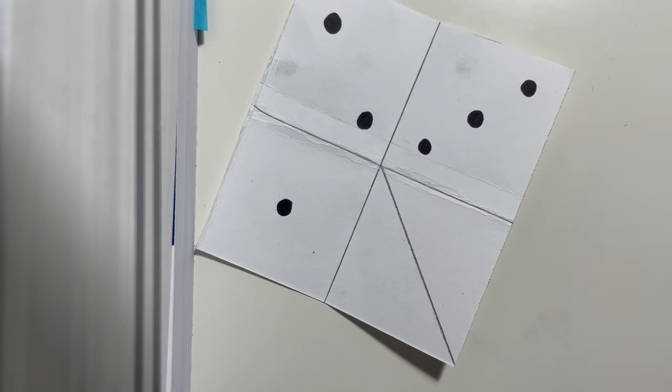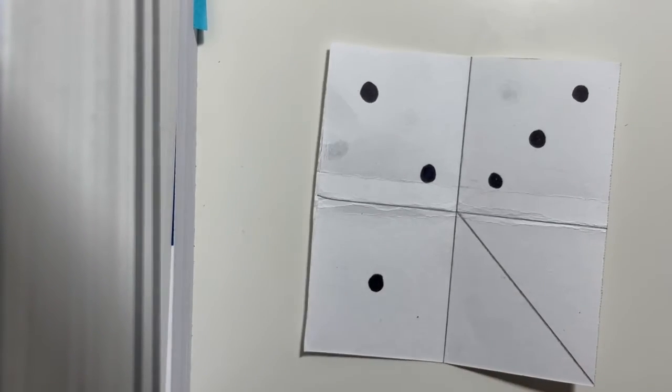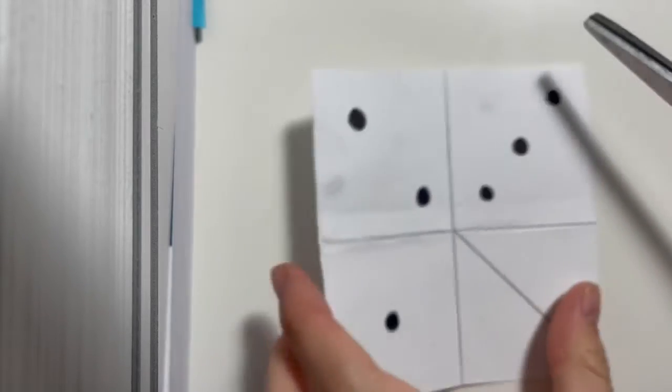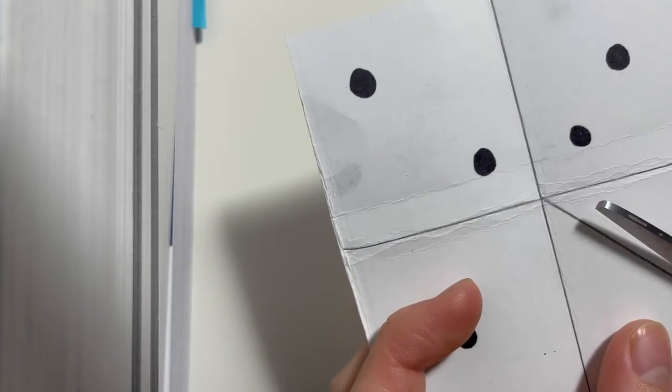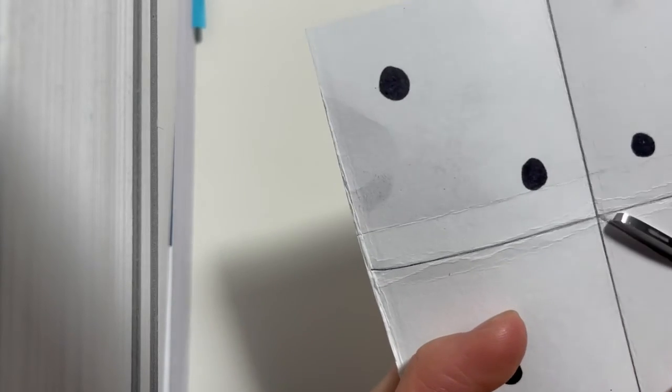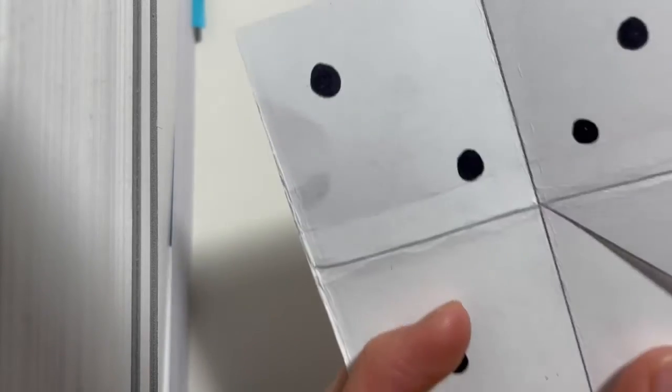Okay, there we go. We have our dice drawn out. Now what you want to do is take some scissors and then cut along this line right here that you made. So I'm going to cut along it like so. Great.